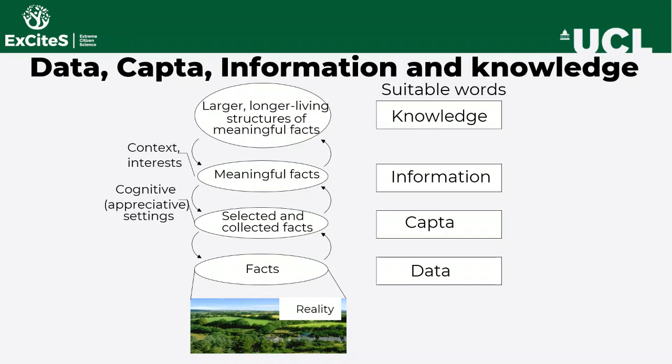CAPTA is a concept suggested by Checkland and Hallwell in the book 'Information Systems and Information Systems.' It is used to differentiate from data — all the facts that exist in the world in general — and to point out that in any given situation we are making a decision on which facts we want to collect out of all possible facts. This means that even at the data collection stage we are already making important decisions on what questions can be asked and what can be done with the information.